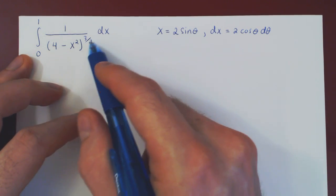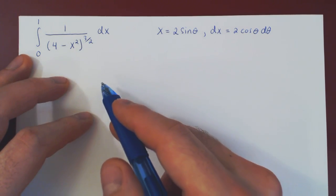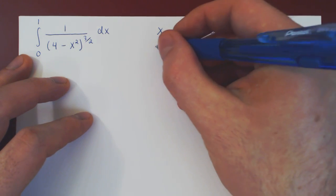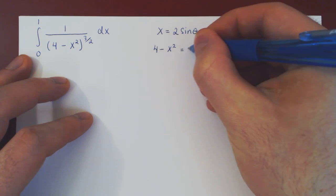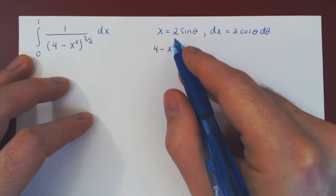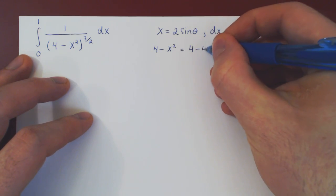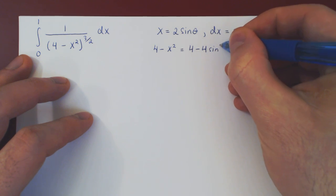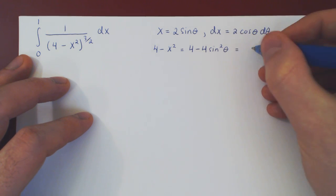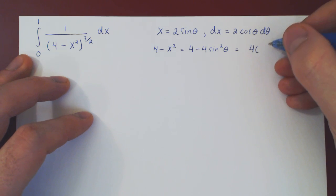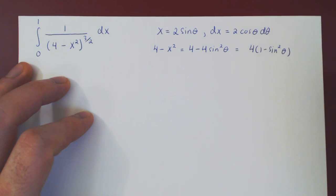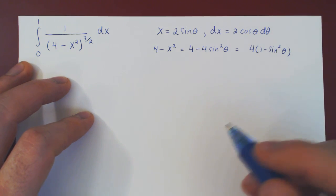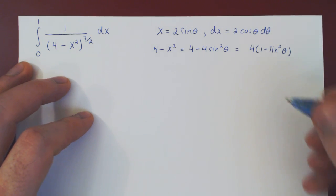And now let's simplify our denominator. So we have 4 minus x squared is 4 minus, if you square 2 sine, you get 4 sine squared. You can factor out the 4, and you'll have 1 minus sine squared of theta, but 1 minus sine squared theta is cos squared.